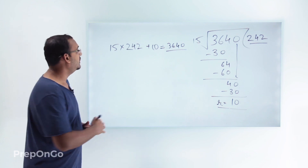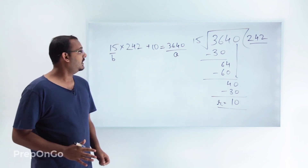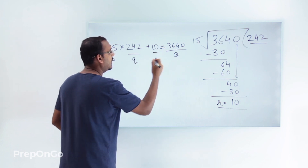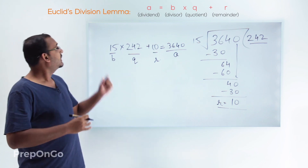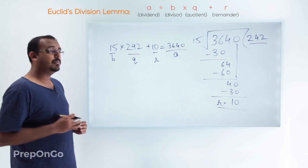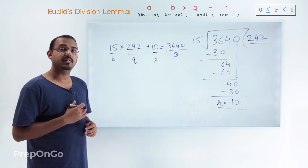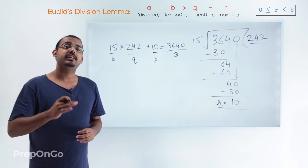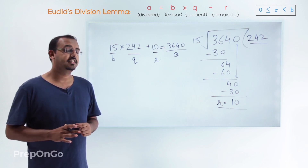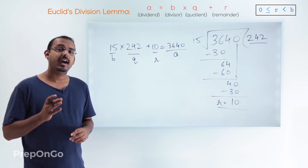For any two numbers a and b, where a is the dividend and we are dividing a by b, we can represent this division as a = bq + r. Here q is the quotient and r is the remainder. There is one very important condition: r should be greater than or equal to 0 and less than the value of the divisor b. This is the statement of Euclid's division lemma. Furthermore, the representation is unique given the condition 0 ≤ r < b.